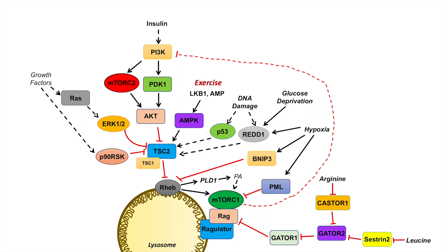When mTOR complex 1 is activated, it leads to a negative feedback inhibition of PI3K. So in the insulin signaling pathway, for instance, mTOR complex 1 actually shuts its own signaling down by inhibiting PI3K. Also, P70S6K — a downstream target of mTOR complex 1 — leads to the inhibition of proteins upstream in the insulin signaling cascade, ultimately downregulating mTOR complex 1 signaling. So mTOR complex 1 and some of its downstream targets shut off their own signaling after a period of time — it is involved in a negative feedback inhibition loop.